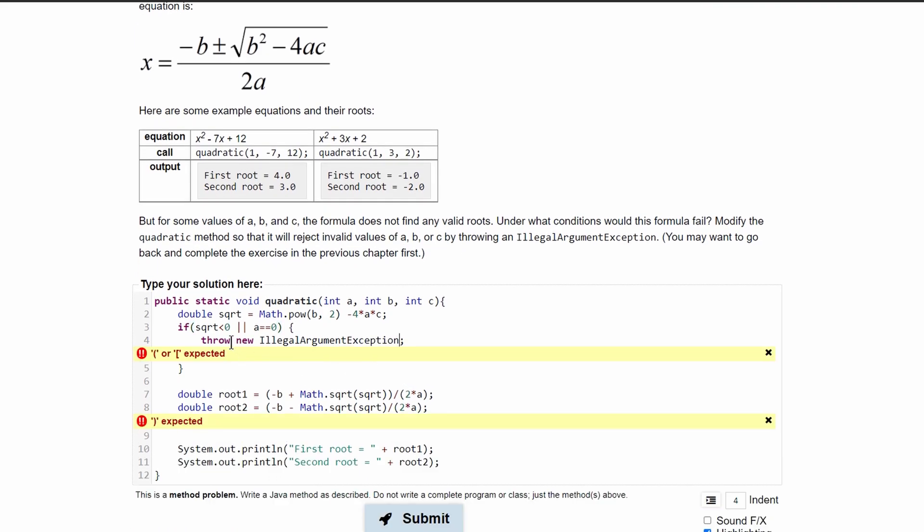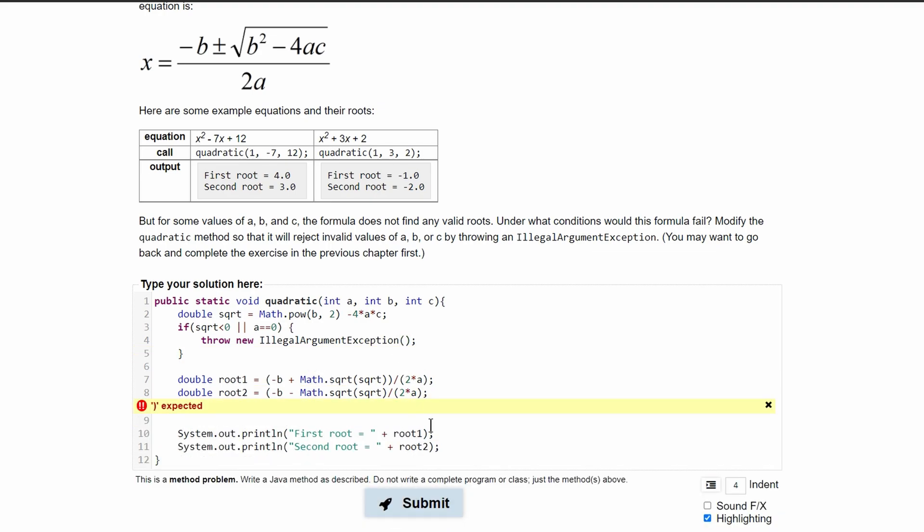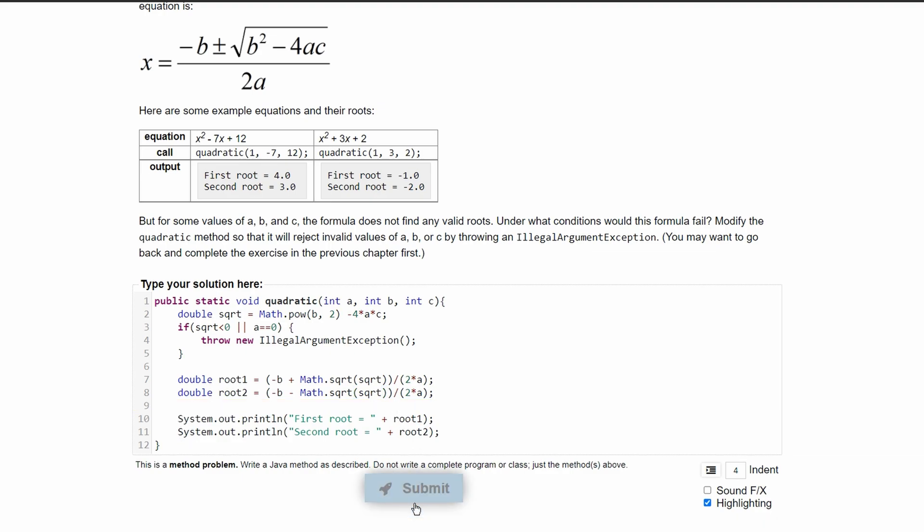It's important to know that the new illegal argument exception is a method in itself, so we need to have parentheses right after that. Also I accidentally got rid of one of the parentheses in here so I have to add that back in, and this one up here.